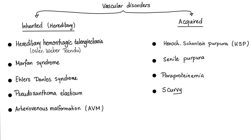Do you remember the problem in scurvy? Without vitamin C, I will not be able to hydroxylate proline and lysine. So I have a problem with the enzymes prolyl hydroxylase and lysyl oxidase — not to be confused with Lysol. If my collagen is weak, my blood vessel wall is weak, and if my blood vessel wall is weak, I will bleed.